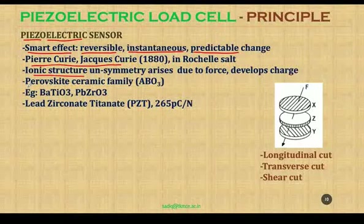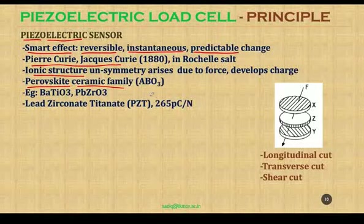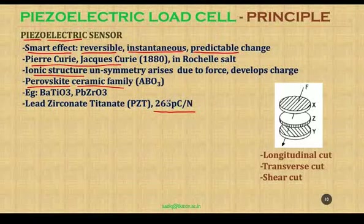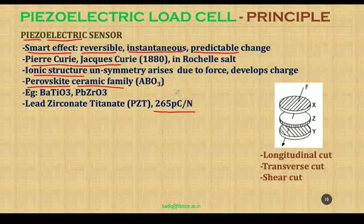Certain material families such as the perovskite family in ceramics display the piezoelectric effect. Examples include barium titanate and lead zirconium titanate (PZT). PZT is one of the most commonly used piezoelectric materials in piezoelectric dynamometers and load cells. It typically develops around 265 picocoulombs per newton — this is called the charge sensitivity. Pico means 10 to the power of minus 12, so the charge is very low. These sensors require charge amplifiers, making the overall system relatively costly.